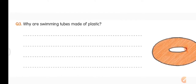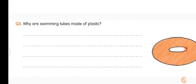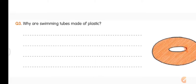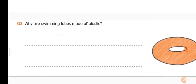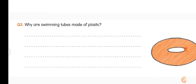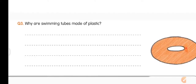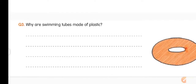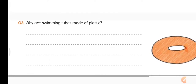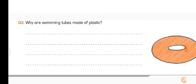Question 3: Why are swimming tubes made of plastic? We saw the swimming tube picture at the start. Because plastic floats on water, swimming tubes are made of plastic so that people can float on water while using them.